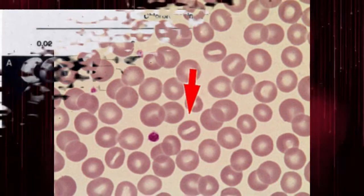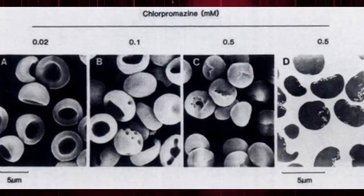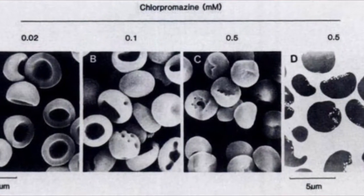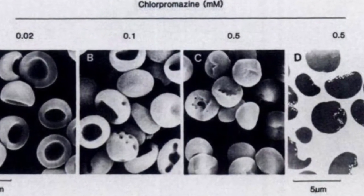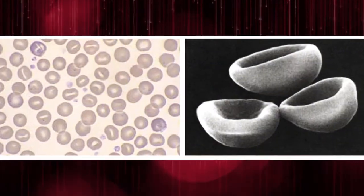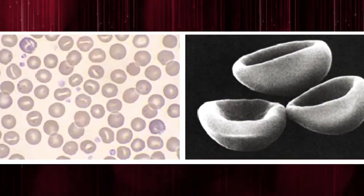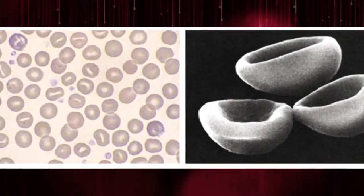In three dimensions, the stomatocyte is actually the shape of a bowl, as the cell has lost its biconcave morphology due to a membrane defect.